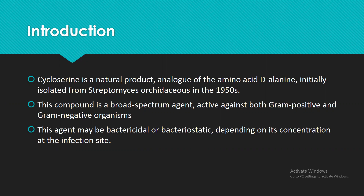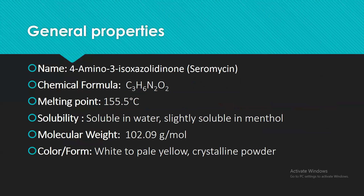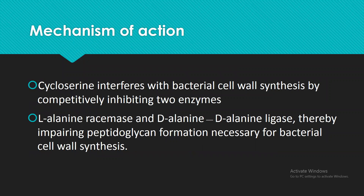The bactericidal effect means it is going to kill that bacterium, whereas the bacteriostatic effect means it is going to inhibit the growth of that organism. Regarding general properties: its name is 4-amino-3-isoxazolidinone and its trade name is Seromycin. Its chemical formula is C3H6N2O2, it has a melting point of 155.5°C, and it is soluble in water but slightly soluble in methanol. It has a molecular weight of 102.09 grams per mole.